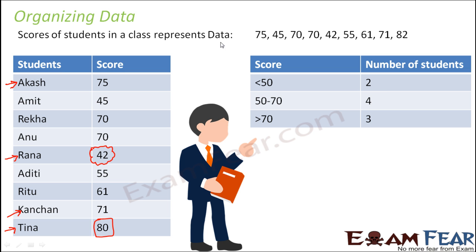How would this table help you? This table is the easiest of the two options because looking at it, you get a very fair idea about the performance of the whole class. Even though you do not get to know the name of the student who scored highest or lowest, you get an idea about the average performance. You can see that only two students out of nine scored less than 50 — the rest performed either average or above average.